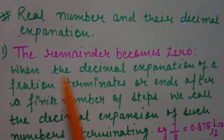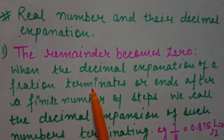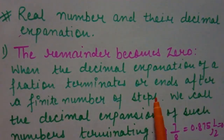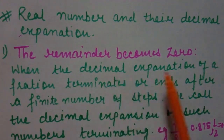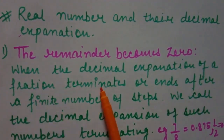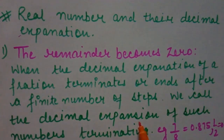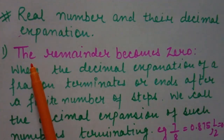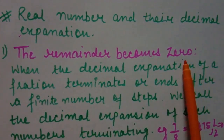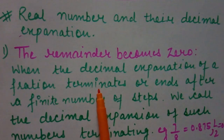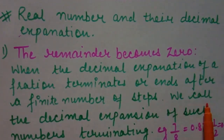The first case is when the remainder becomes zero. When the decimal expansion of a fraction terminates — meaning the division process finishes or ends after a finite number of steps — we call the decimal expansion of such numbers as terminating.